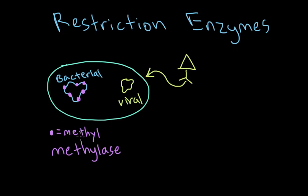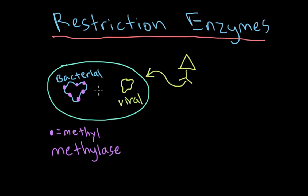What methylation basically does is it allows the bacteria to recognize its own DNA and recognize any DNA that's not methylated as foreign DNA. So now we have another enzyme floating around in the cytoplasm of the bacteria — that enzyme is known as a restriction enzyme. This restriction enzyme floats around, recognizes the methylated bacterial DNA, but then it sees this foreign unmethylated DNA and it goes and destroys it.